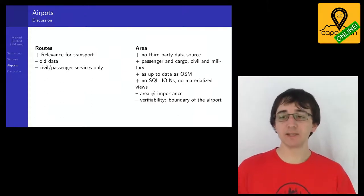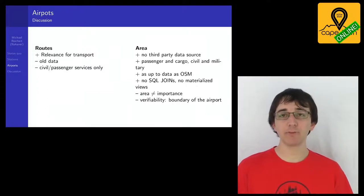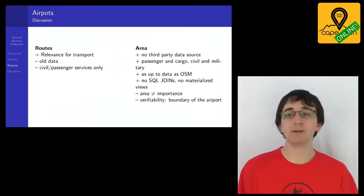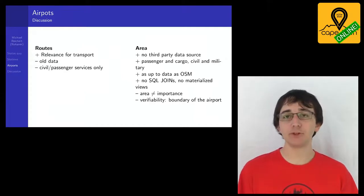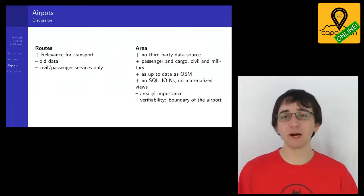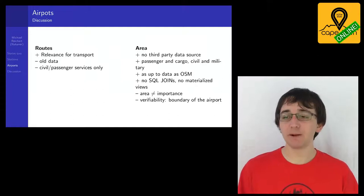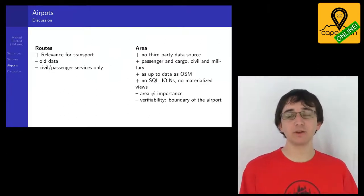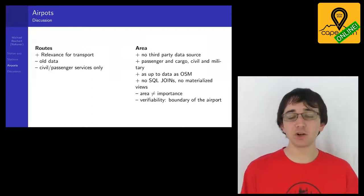Using area for ranking reveals airports like Ramstein and Spangdahlem — large American airbases with no civil service. Leipzig becomes much more important compared to the passenger-only map, since it is a major cargo hub. However, area does not directly equate to importance — some airports were built large but are underutilized. Verifiability can also be questioned, since the boundary of an airport depends on whether you include the fence, terminal building, taxi ring, or nearby train station.